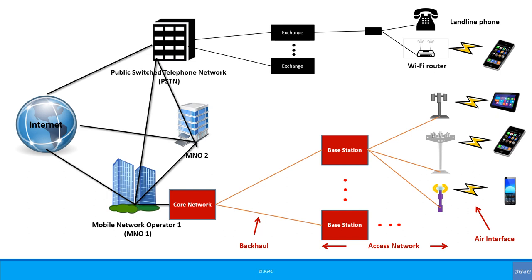This is a slide from our first ever video. As you can see, the mobile network consists of buildings, data centres, network equipment, fibre and other backhaul connectivity equipment, cables, connectors, antennae, etc. These are all infrastructure. We generally refer to everything tangible as infrastructure. Some people go a step further and refer to the knowledge people have based on experience as intangible infrastructure, but we won't go into this right now.